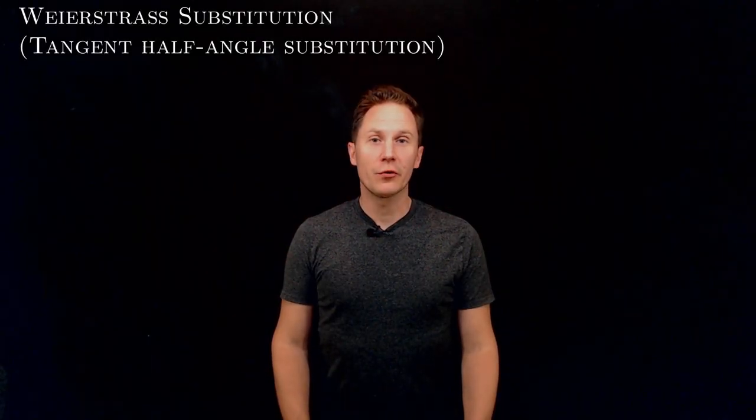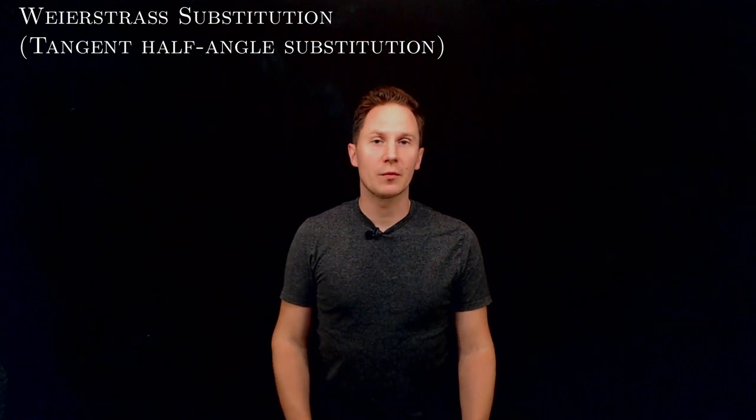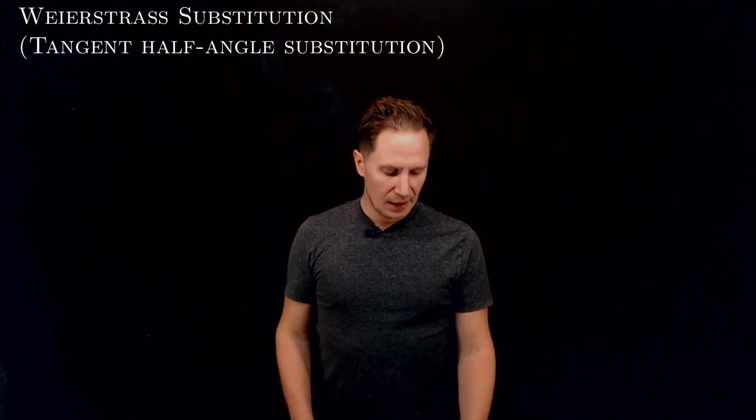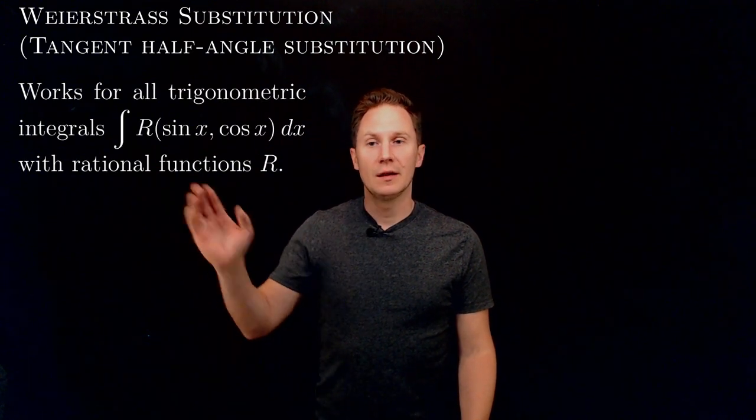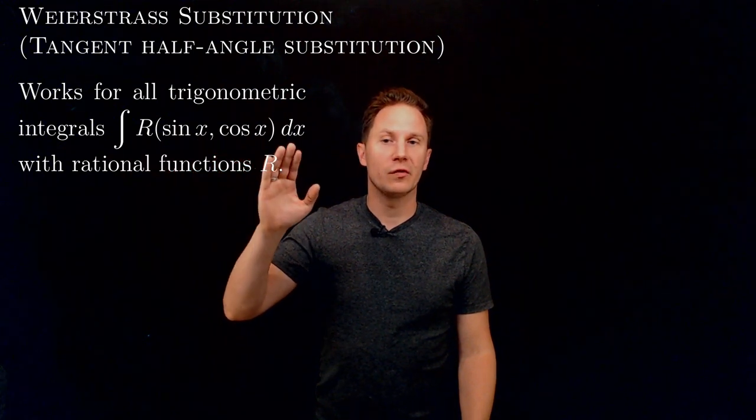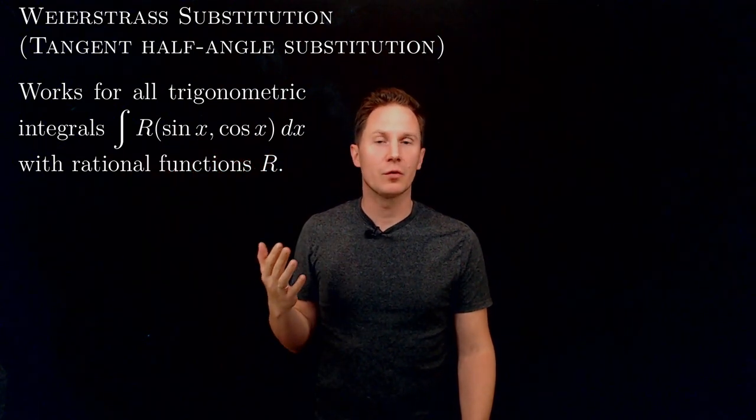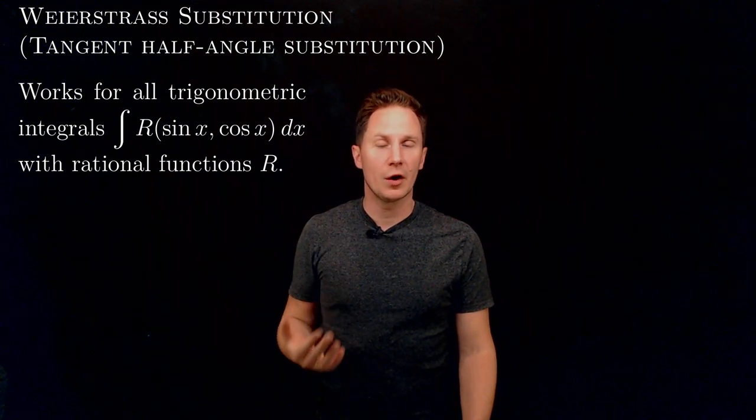The Weierstrass substitution, also known as the tangent half-angle substitution, is like magic. It works for all trigonometric integrals of the form ∫R(sin x, cos x)dx, where R is any rational function of sine x and cosine x.